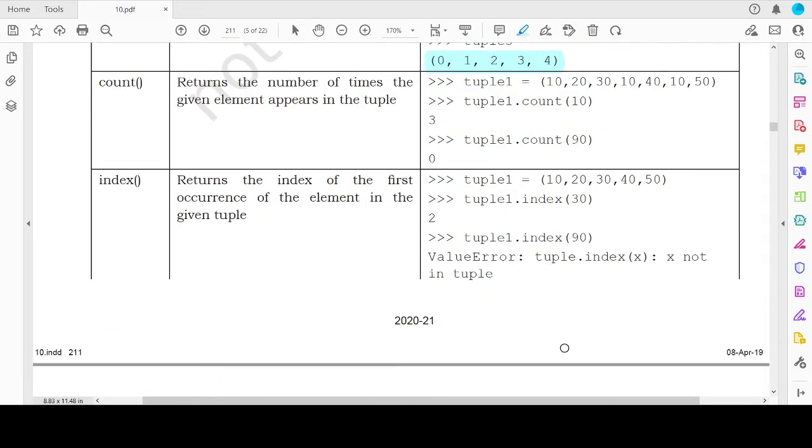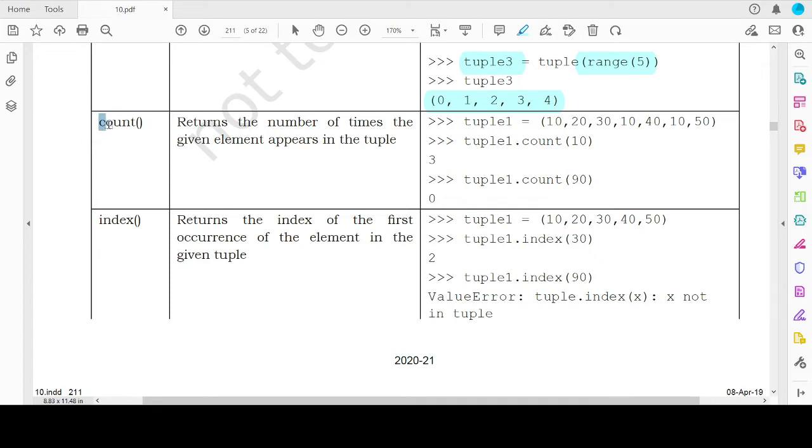Coming to the next built-in function for tuples, this is the count function. So the count function just like the count function for lists, here also it will count the occurrences of a particular argument that is passed to it. So if this is a tuple having these elements, tuple1 and we want to count the occurrence of an element 10, then since 10 is occurring 3 times, the value 3 will be returned in this case.